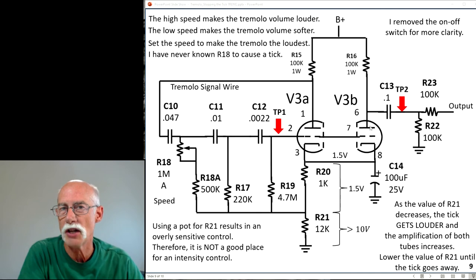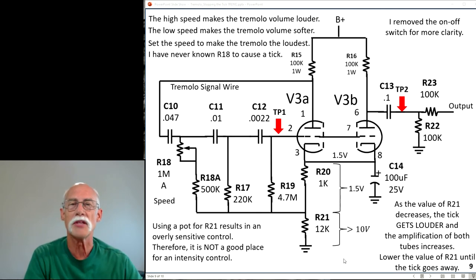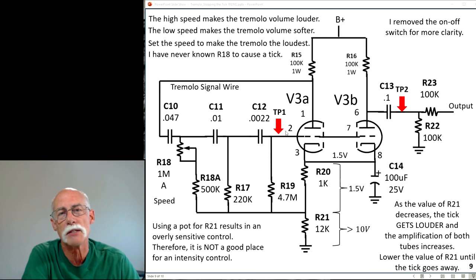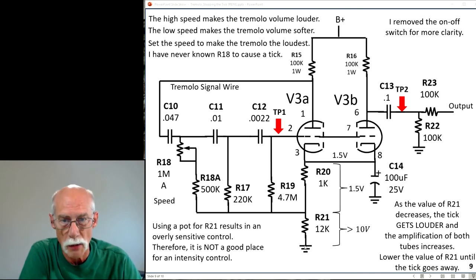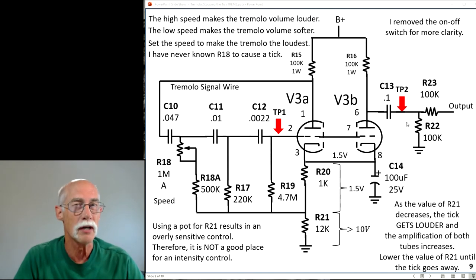You're thinking, 'Well, if I can adjust the amplitude at this point and especially the output here, I don't need a speed control or intensity control. I can just put a pot right there and adjust the volume coming out.' You could, but this thing's a little bit touchy.